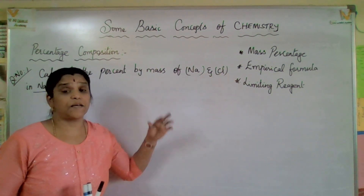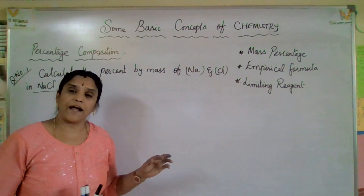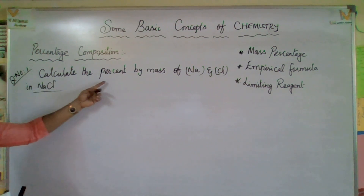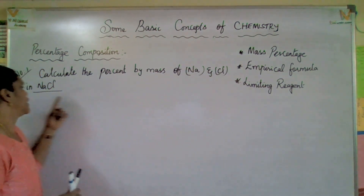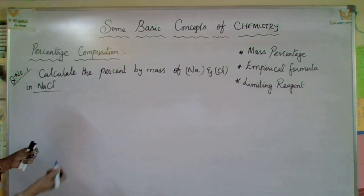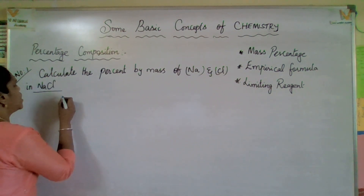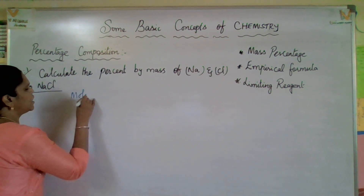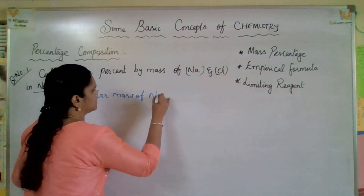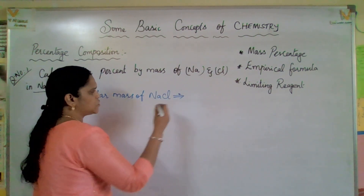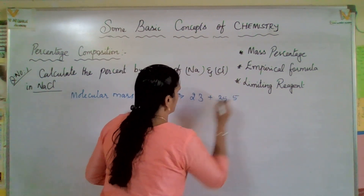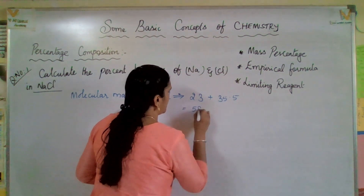Let us discuss percentage composition through related problems. Calculate the percent by mass of sodium and chlorine in sodium chloride. First, find the molecular mass of sodium chloride: sodium is 23 plus chlorine 35.5, so all together it is 58.5 gram per mole.